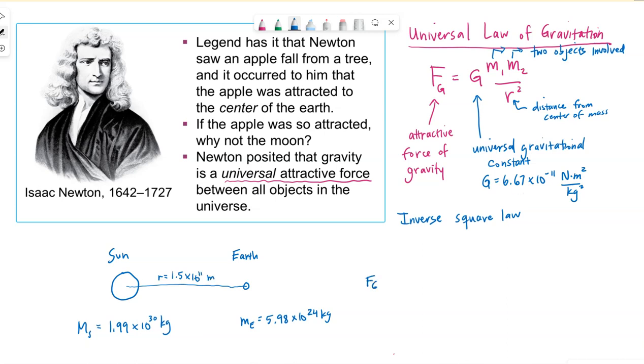Plugging into our equation, we have our constant, this very small number. In terms of m1 and m2 in the equation, it doesn't matter which one's the mass of the sun and which one's the mass of the earth. We always need the mass of both objects that are involved in the attraction. One of them is the mass of the sun, the other is the mass of the earth, and then the distance between them squared.